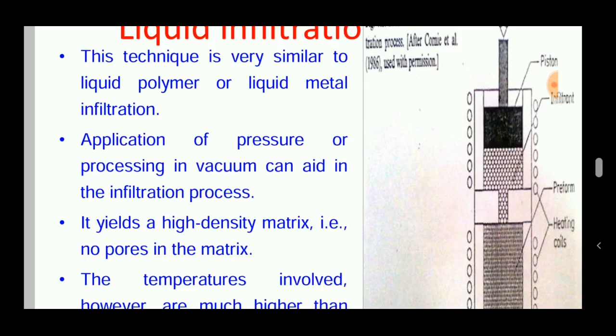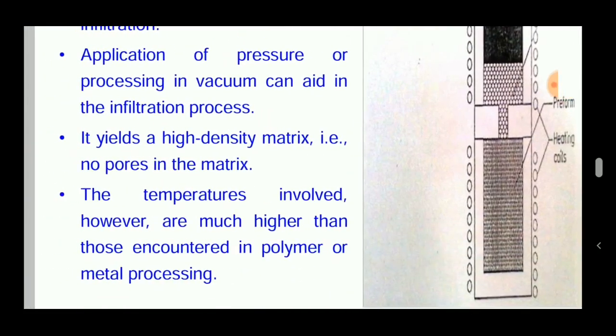A plunger or piston is used to force the matrix material to intrude into the reinforcement, and heating coils of the furnace held around the surface help to sinter the composite material.